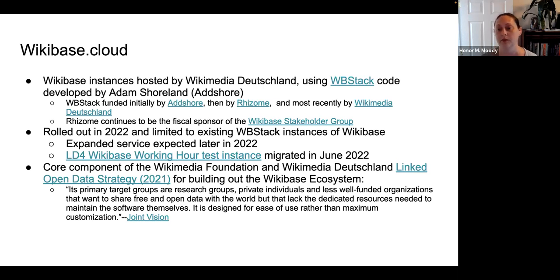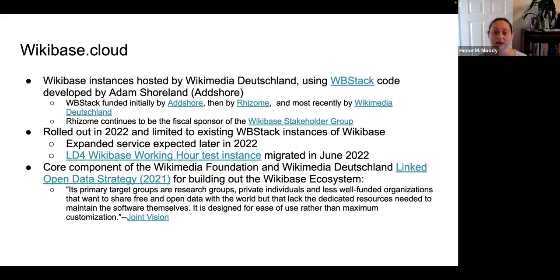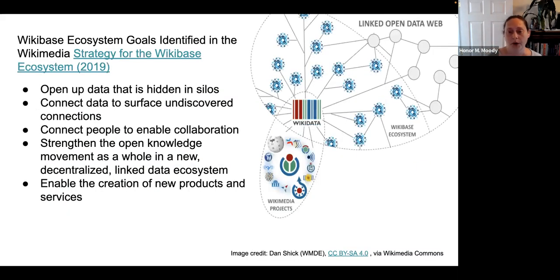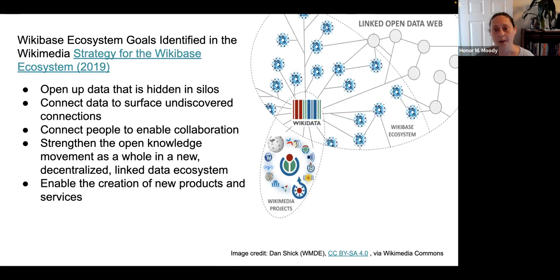Wikibase Cloud being supported by Wikimedia Deutschland is a core component of the Wikimedia Foundation and Wikimedia Deutschland linked open data strategy for building out the Wikibase ecosystem. The primary target groups for Wikibase Cloud are research groups, private individuals, and less well-funded organizations that want to share free and open data with the world, but lack dedicated resources to maintain the software themselves. It is designed for ease of use rather than maximum customization, and supports knowledge equity by enabling underrepresented communities to develop knowledge graphs and technical skills.